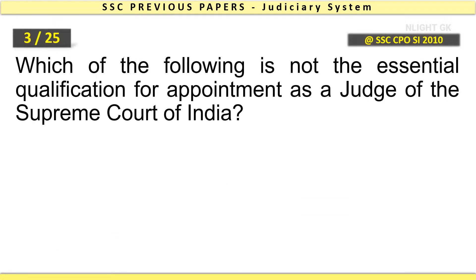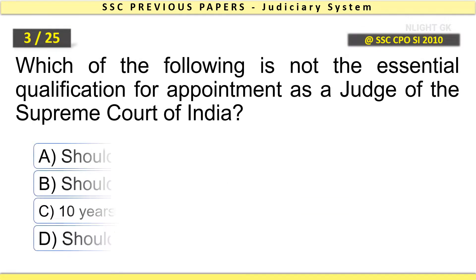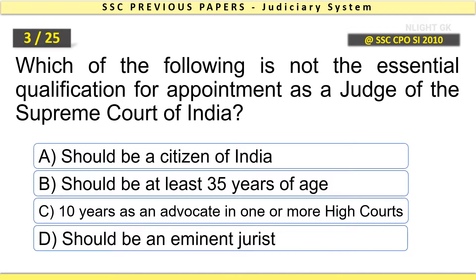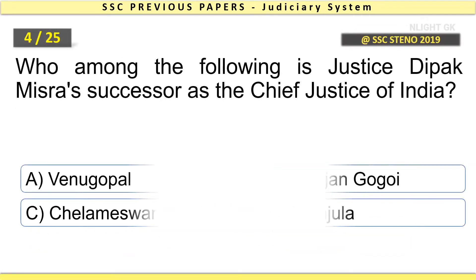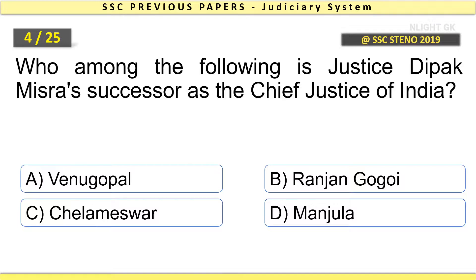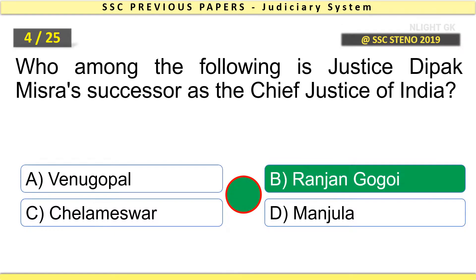Which of the following is not the essential qualification for appointment as a judge of the Supreme Court of India? Answer: should be at least 35 years of age. Who among the following is Justice Deepak Misra's successor as the Chief Justice of India? Answer: Ranjan Gogoi.